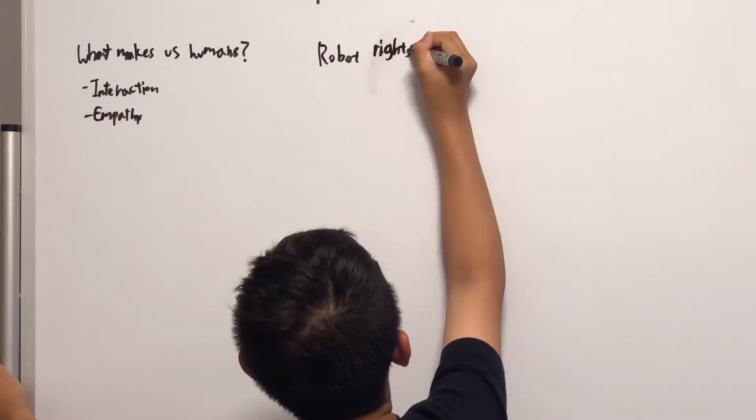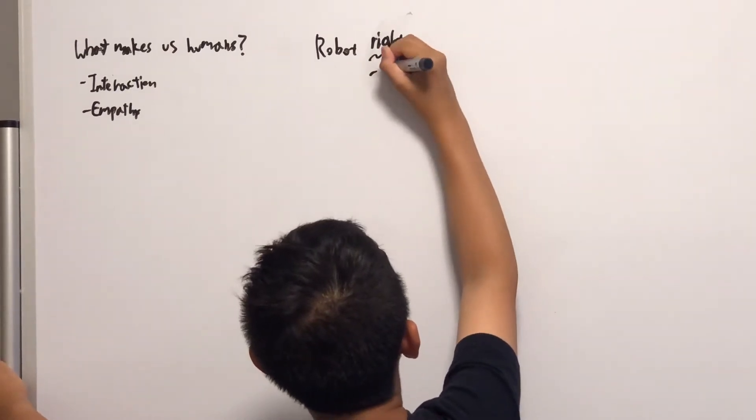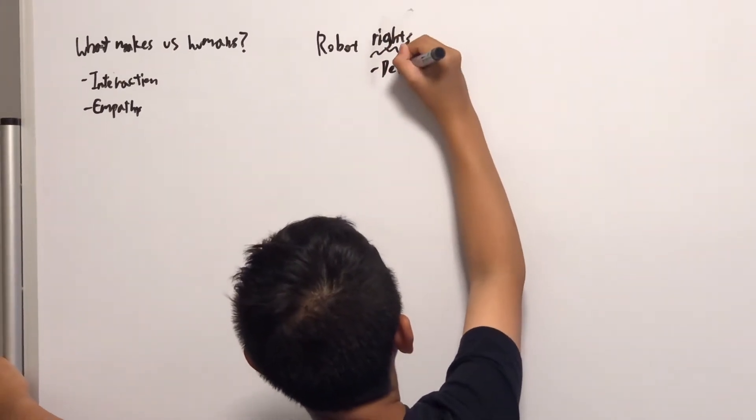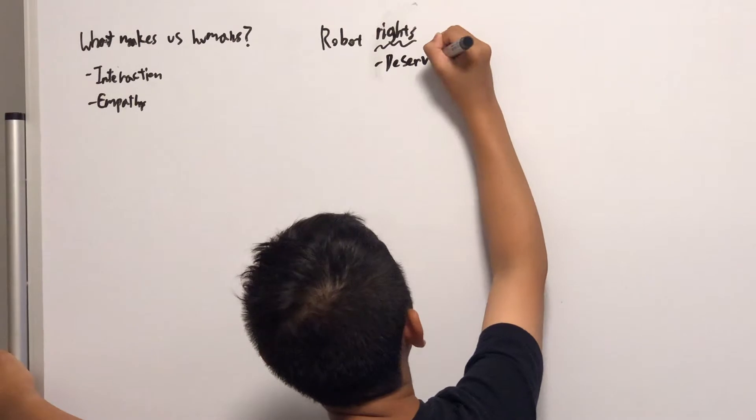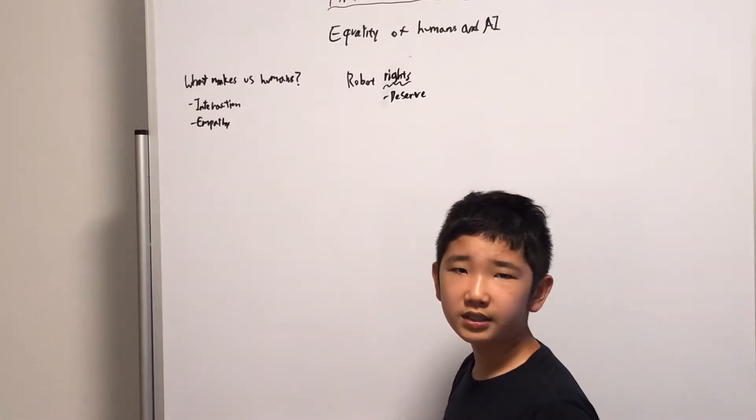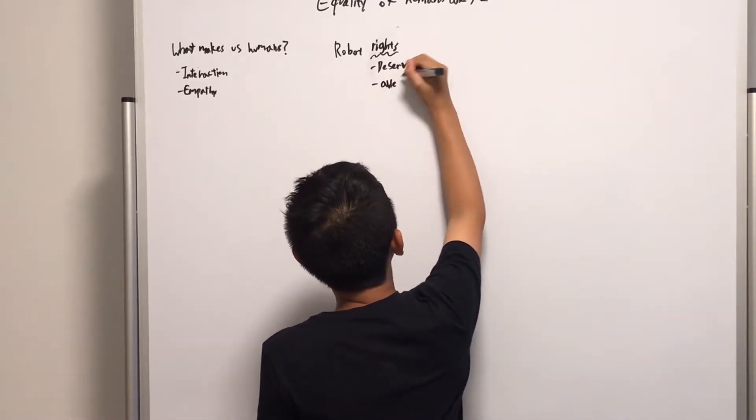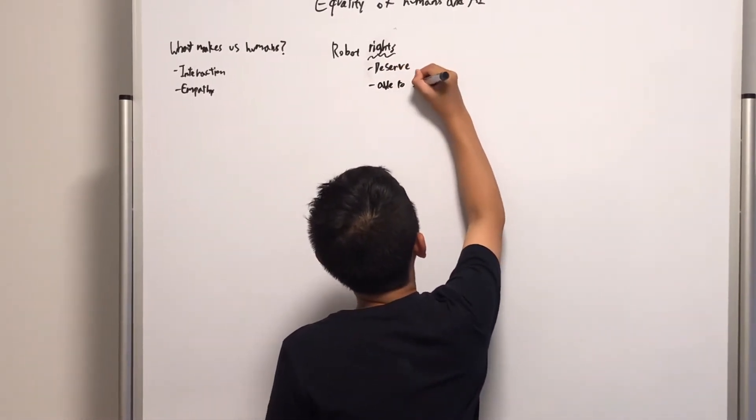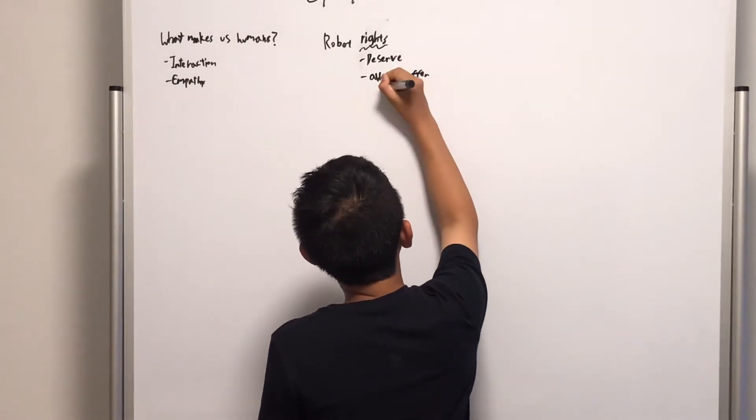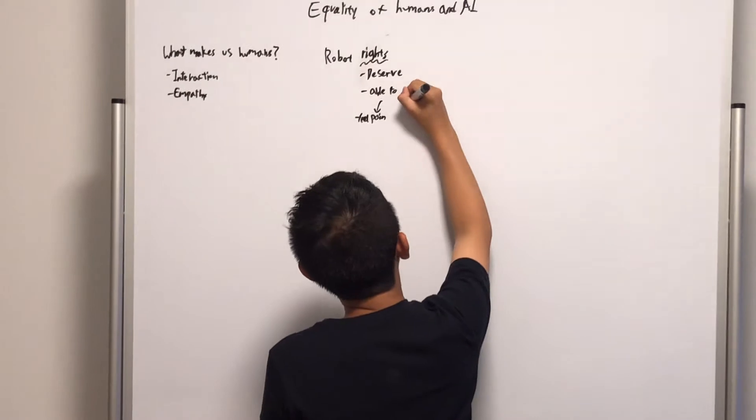But in order to know what robot rights is, I want to know what rights are. This is something that humans deserve. They deserve it. They deserve to get rights. This is because they are able to suffer. Humans are able to suffer. Suffer does not mean like only feel pain, but to be aware of it.